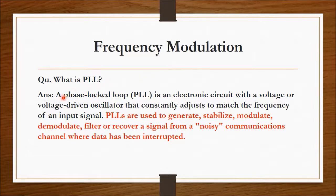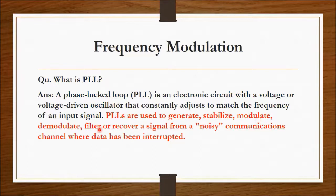The next question is: what is PLL? PLL means phase-locked loop. It is an electronic circuit with a voltage-driven oscillator that constantly adjusts to match the frequency of an input signal. PLLs are used to generate, stabilize, modulate, demodulate, filter, or recover a signal from a noisy communication channel where data has been interrupted. That is why PLL is used in the frequency modulation practical.